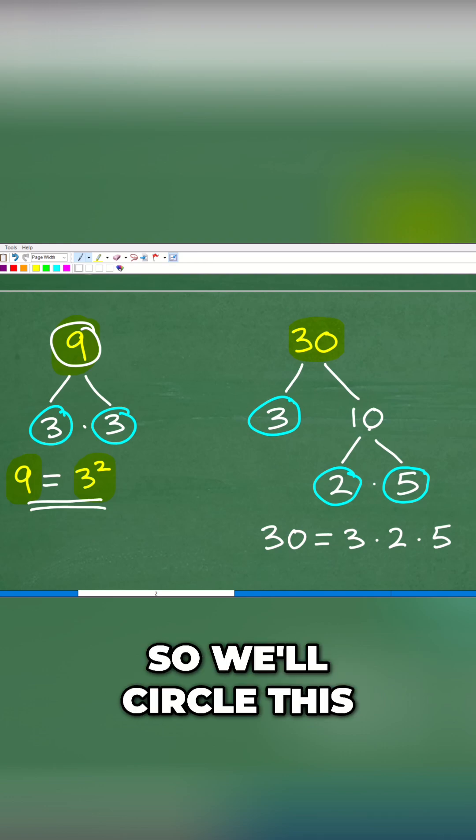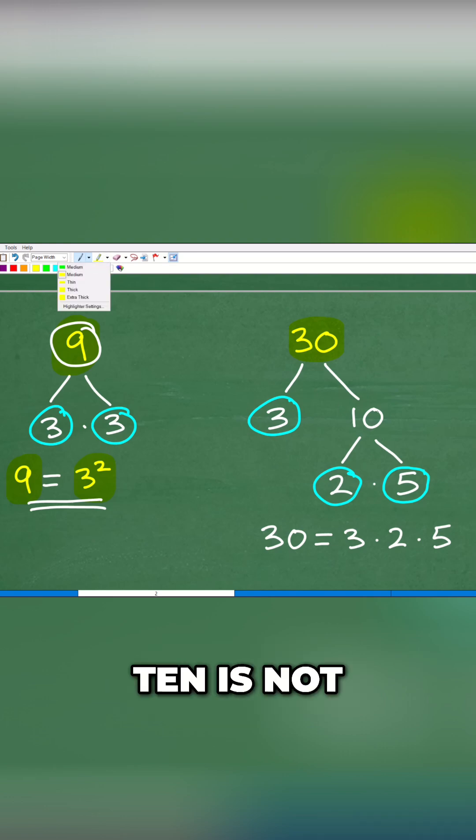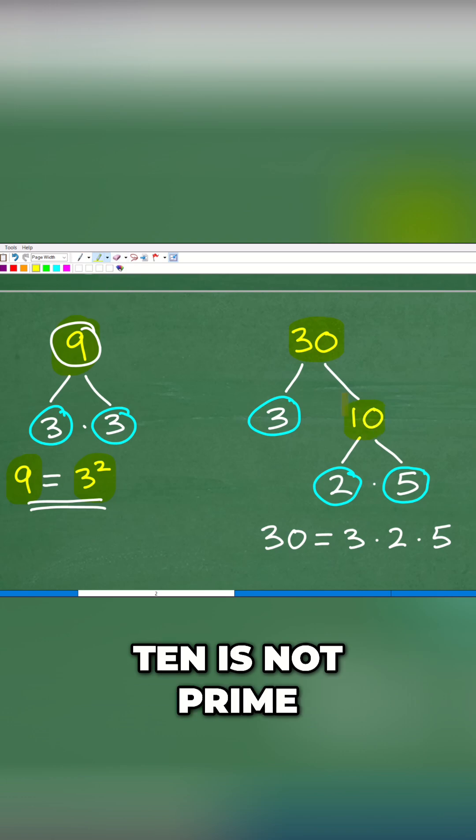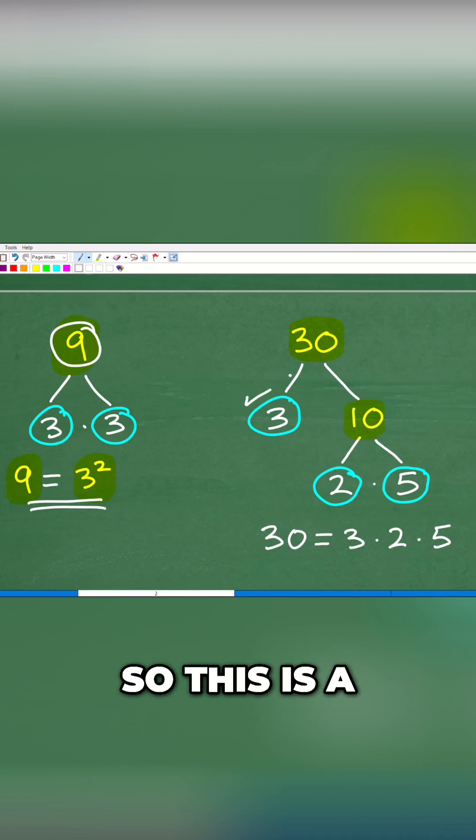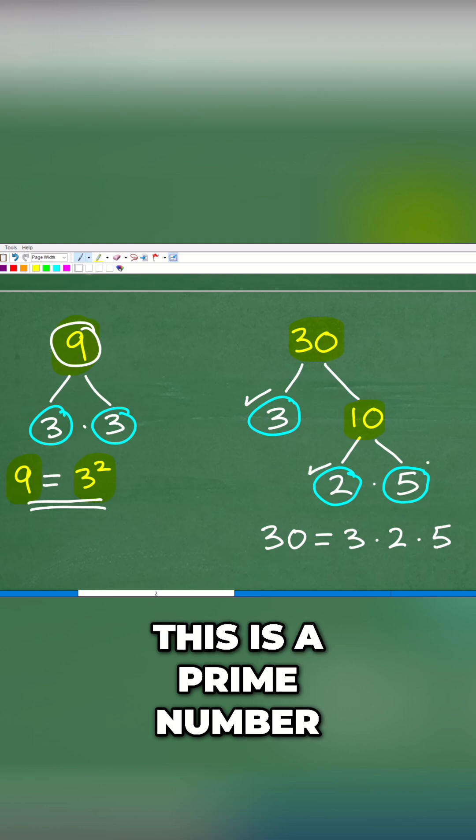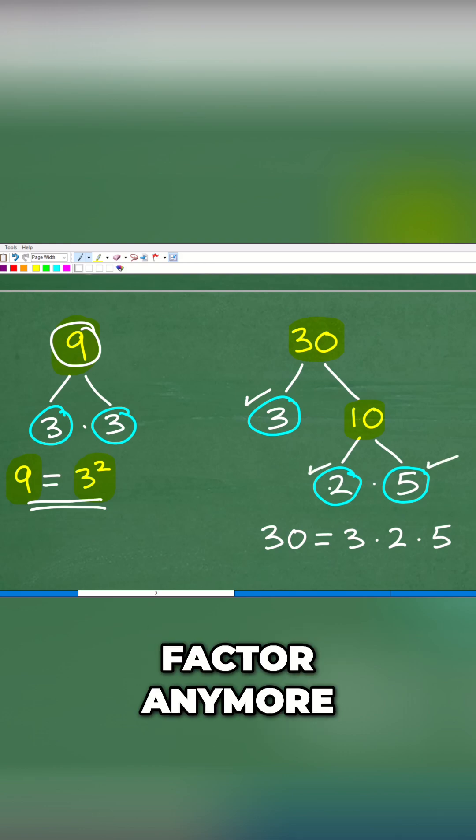Is 10 prime? No, 10 is not prime. So we can continue to factor 10 into 2 and 5. So this is a prime number, this is a prime number, this is a prime number. We can no longer factor anymore, so we circle our prime factors.